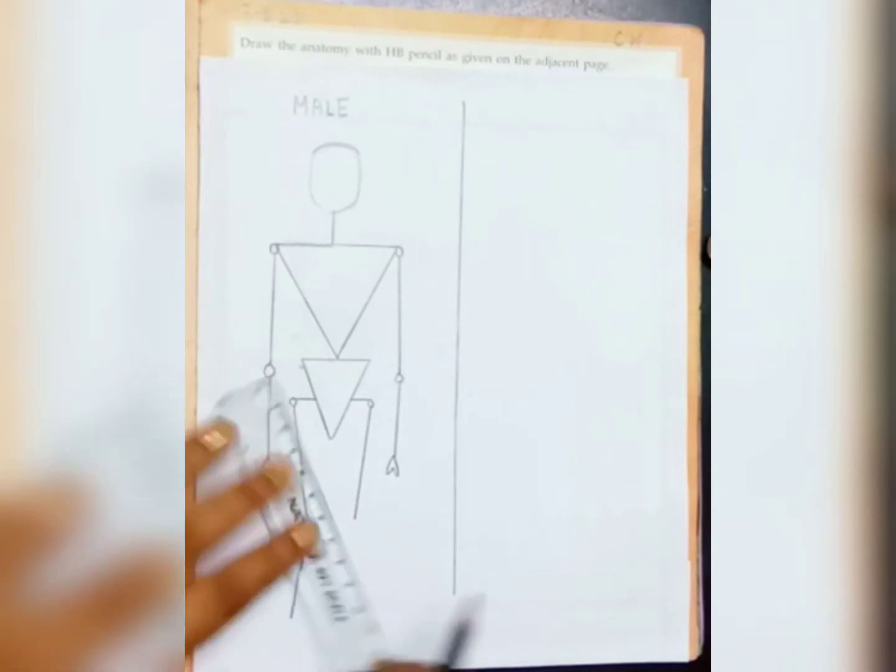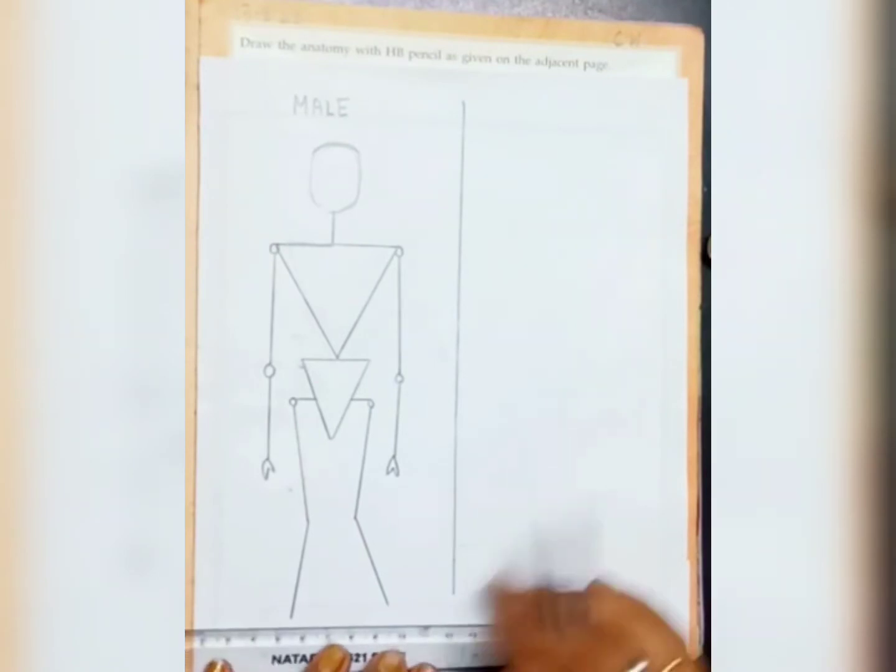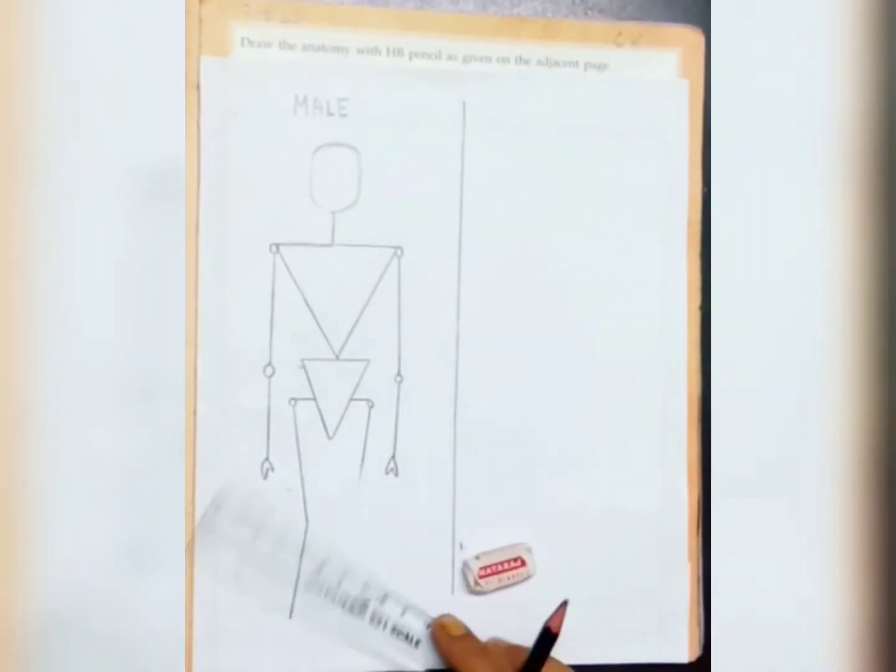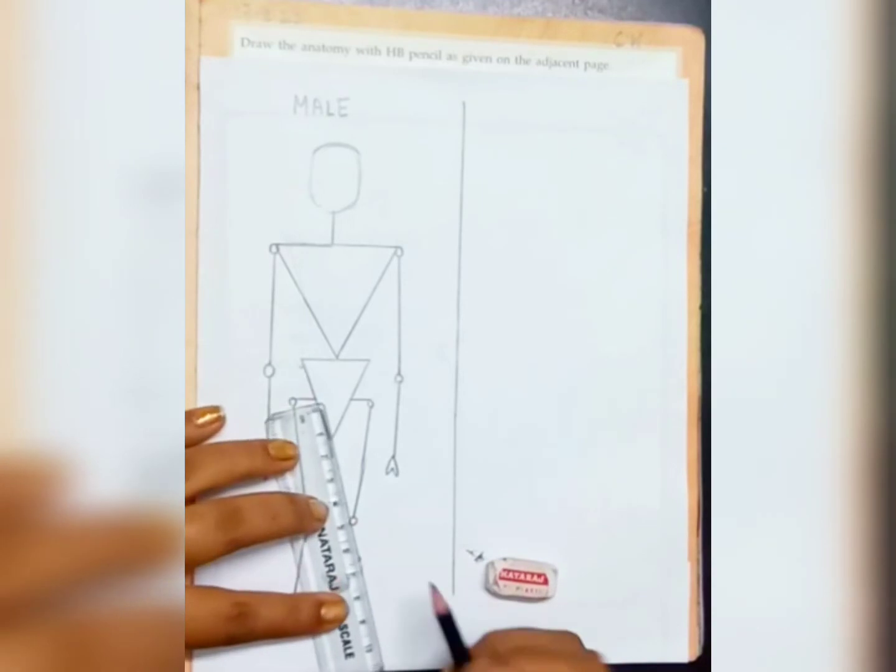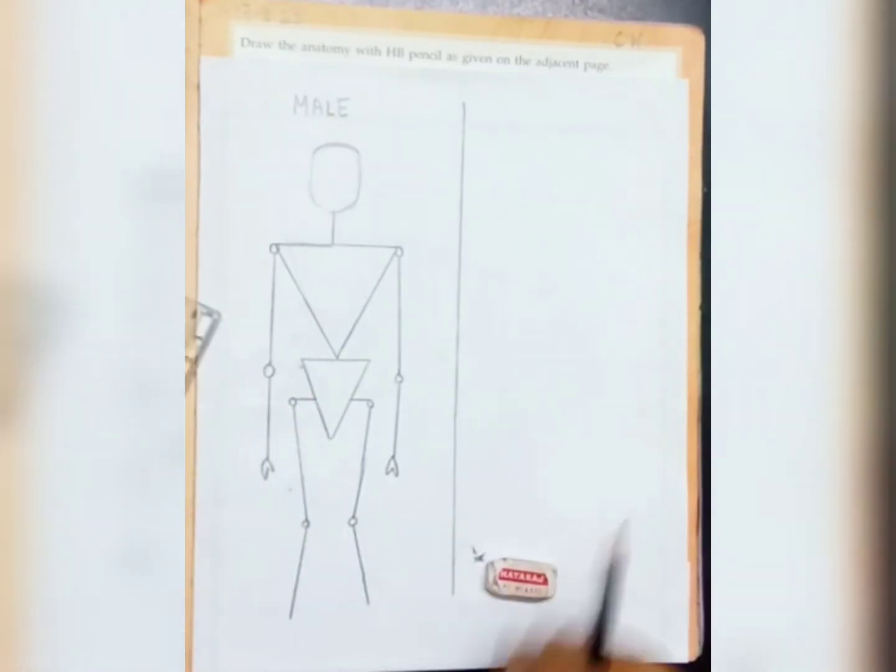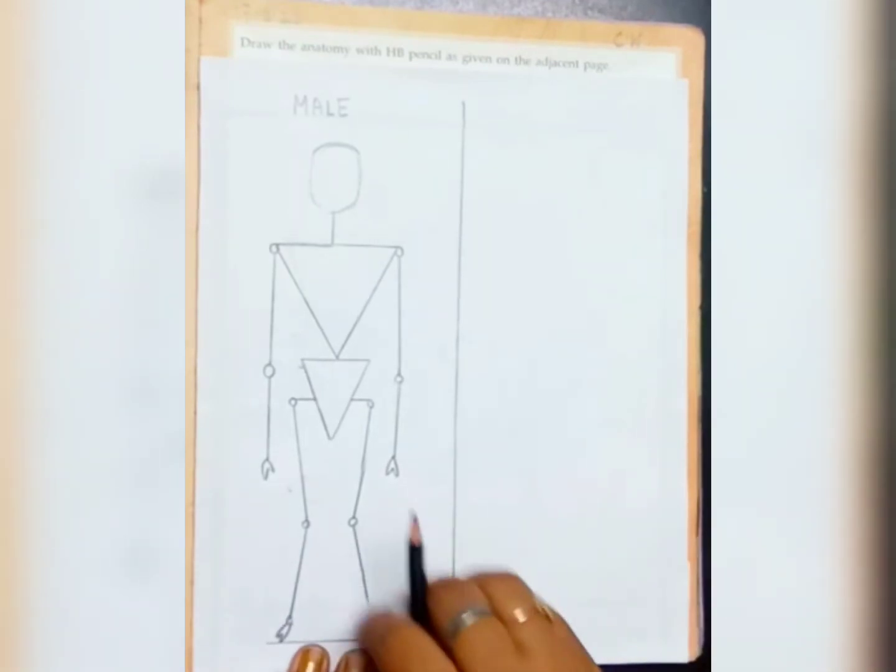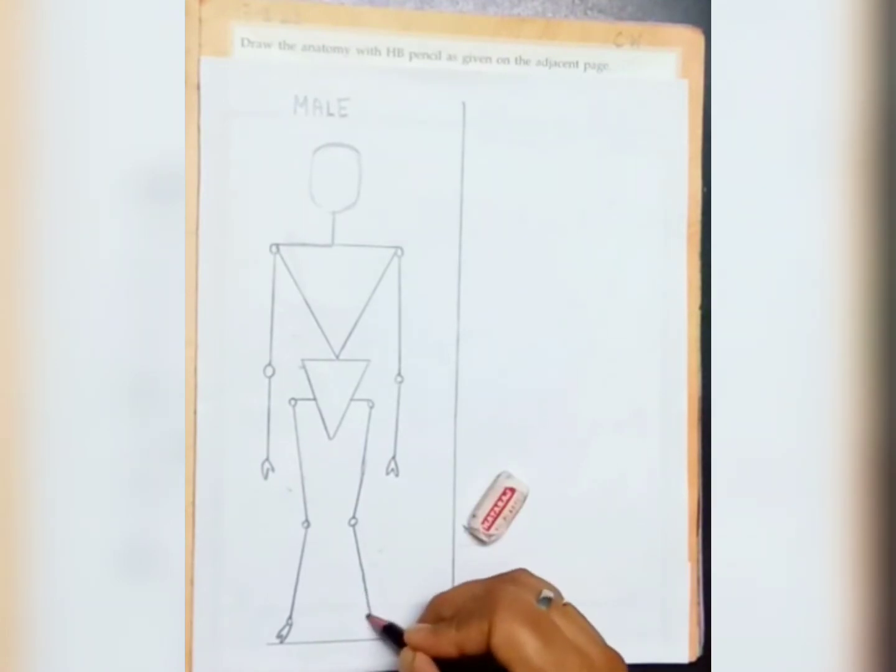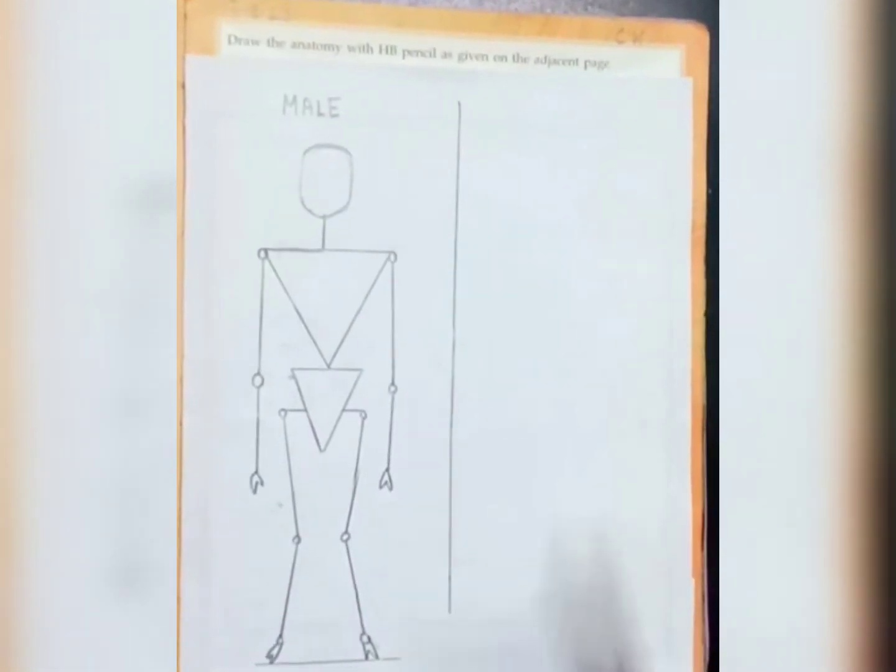Little bit tilted. Circle. See, this is male anatomy. Now we will be drawing female anatomy.